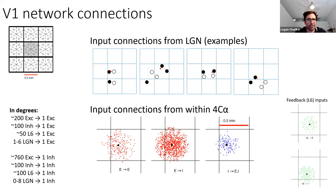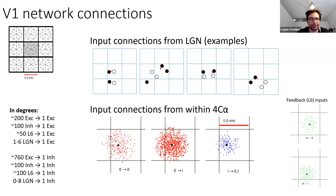The LGN spikes will be stronger than excitatory cortical neurons, but only by a factor of two, and LGN won't spike much faster than other cortical neurons to make up the difference. So we'll see that this makes a big difference for the dynamics that we'll see in cortex.